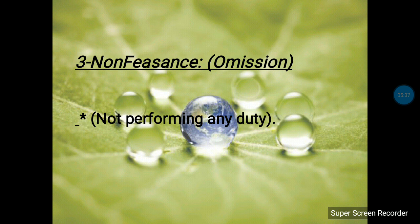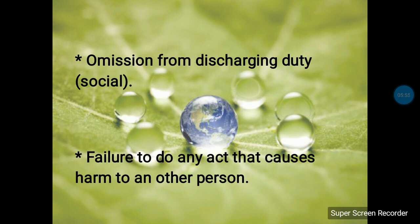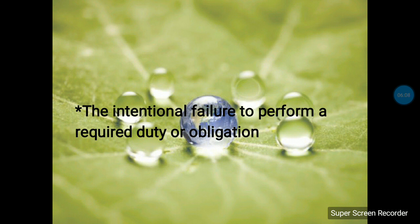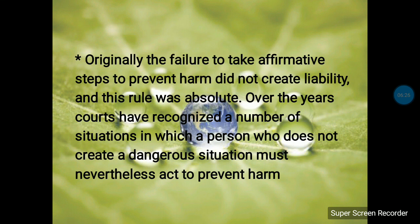The third kind is non-feasance. Malfeasance means commission and non-feasance means omission — when a person omits or fails to perform any duty, not improperly or unintentionally, but simply not performing it at all. This is omission from discharging a duty, which mostly arises in social cases. Non-feasance is the failure to do any act that causes harm to another person, or the intentional failure to perform a required duty or obligation.